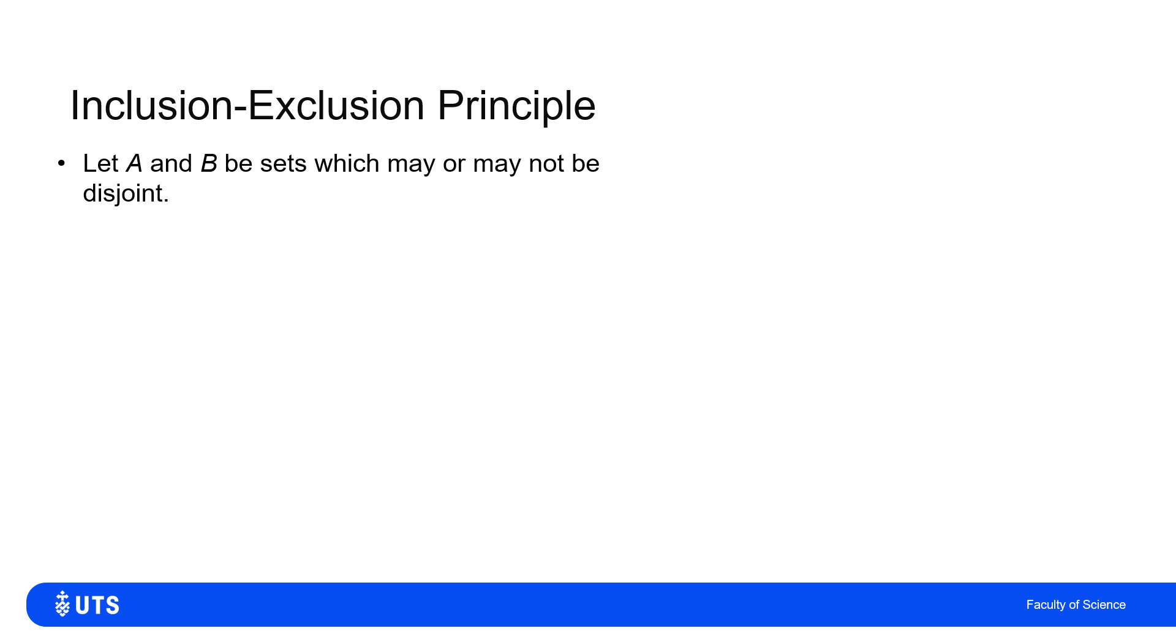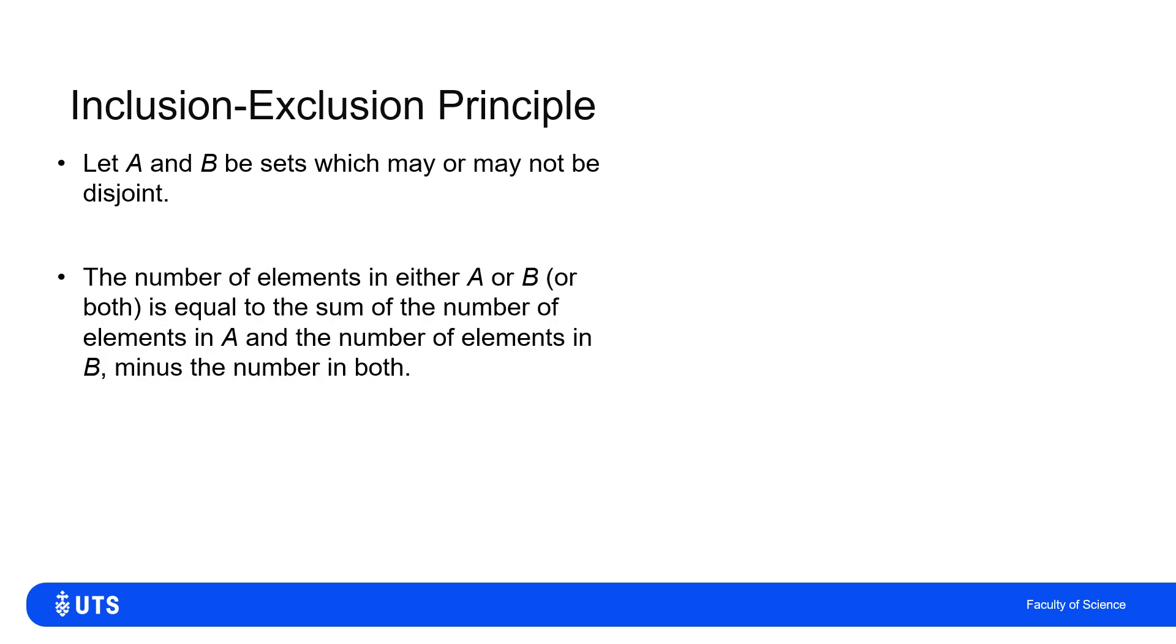So if we consider two sets A and B, which may or may not be disjoint, the number of elements in A or B, or potentially both, is the number of elements in A, cardinality of A, plus the number of elements in B, cardinality of B, minus the number which are in both. So minus the cardinality of A intersection B.